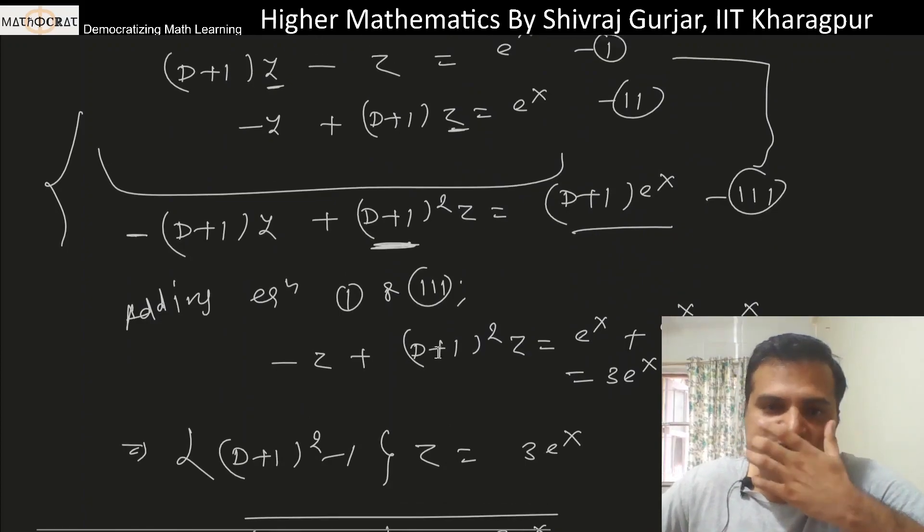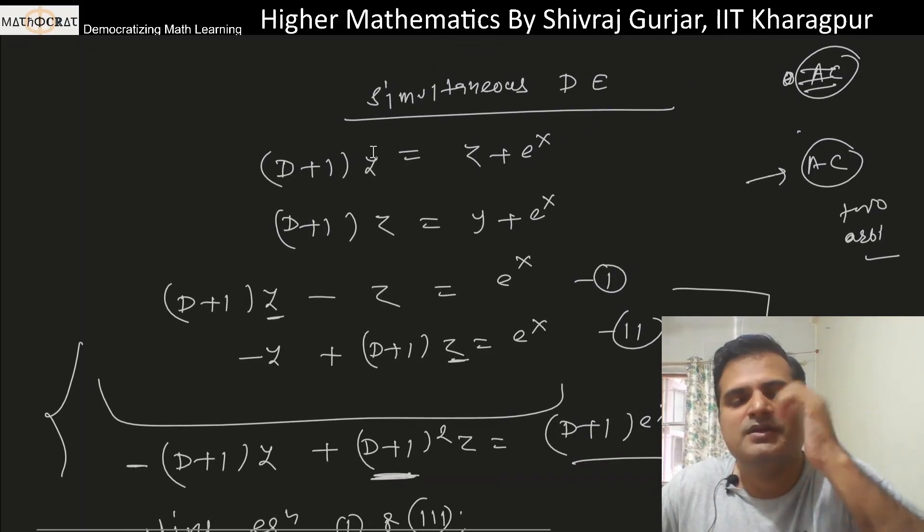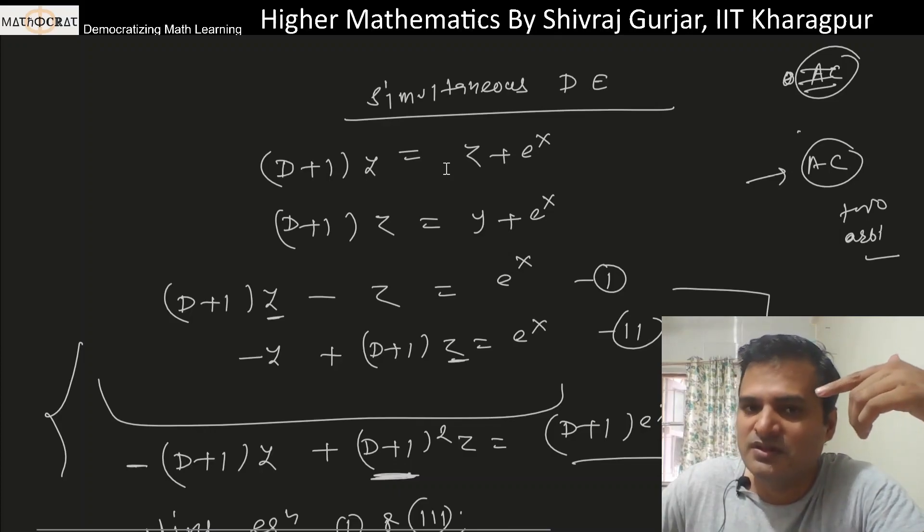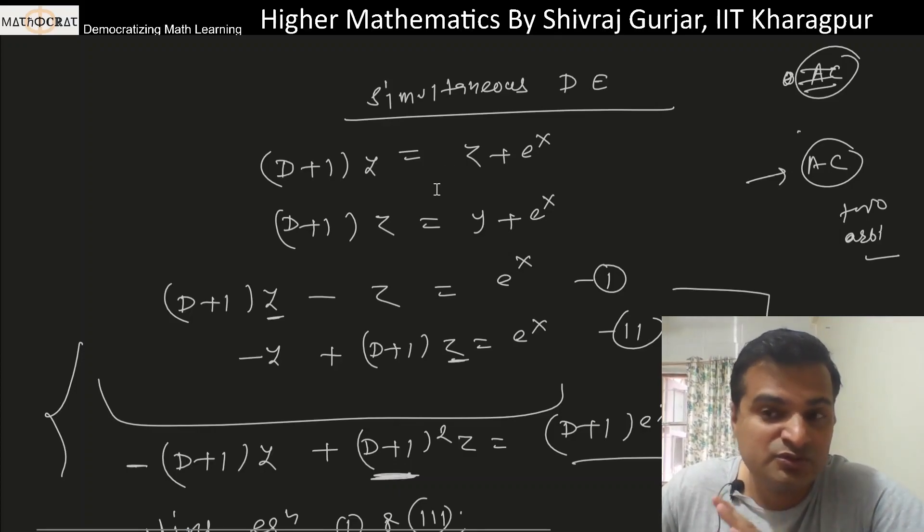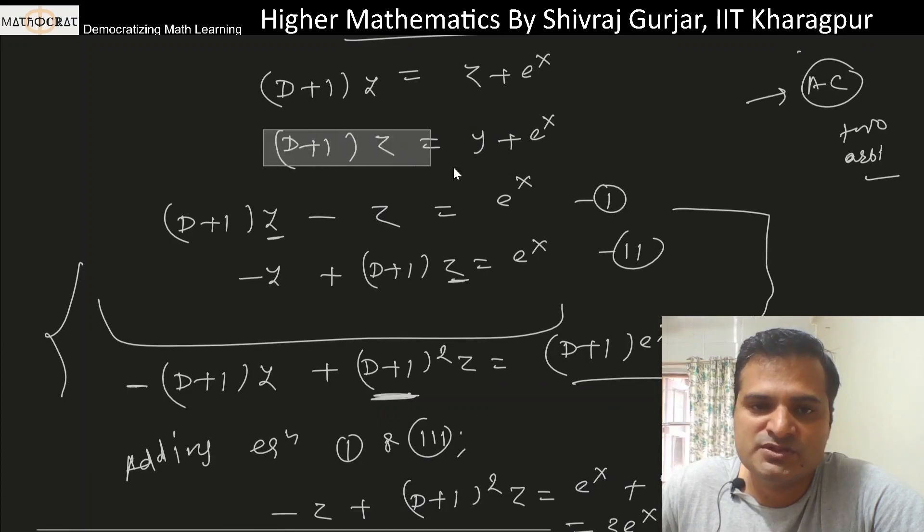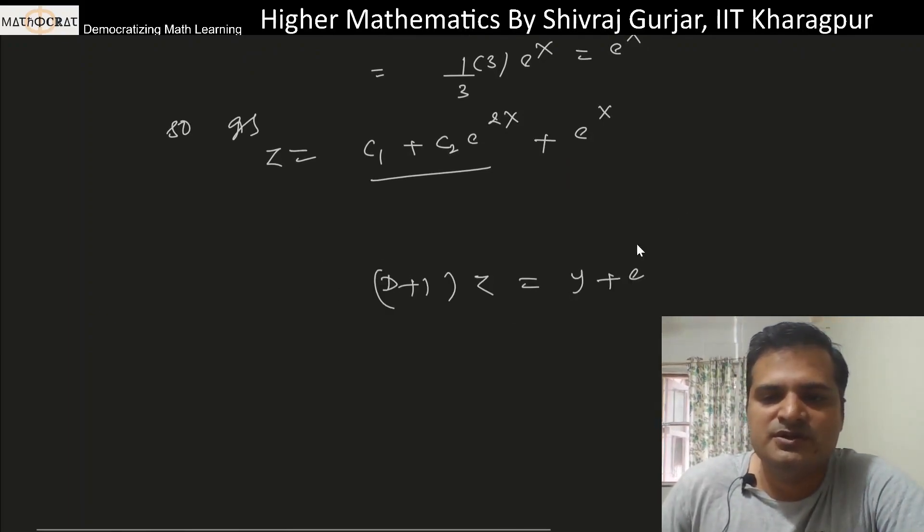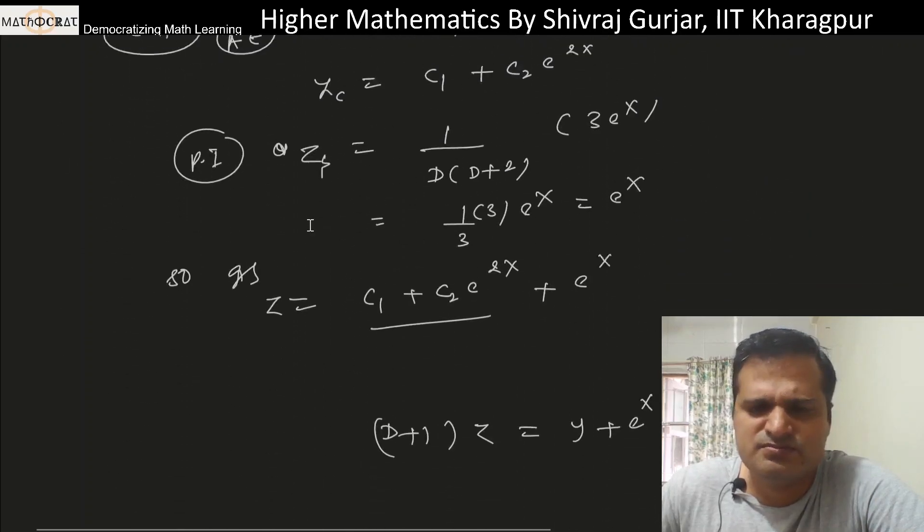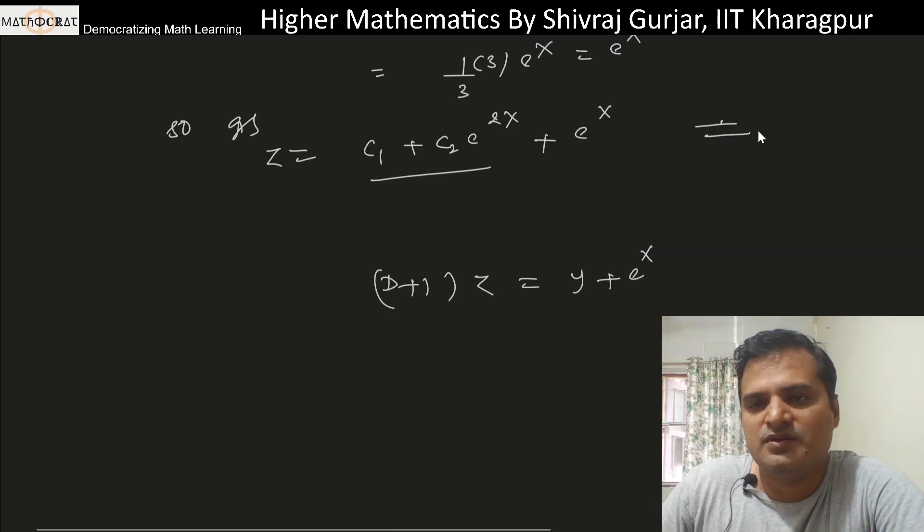Now we want to find y, but we want to avoid integration because we're sure that there will be only two arbitrary constants, not three. If I put the value of z from this equation into the other equation, no new arbitrary constant will come. From our equation, (D+1)z = y + e^x.